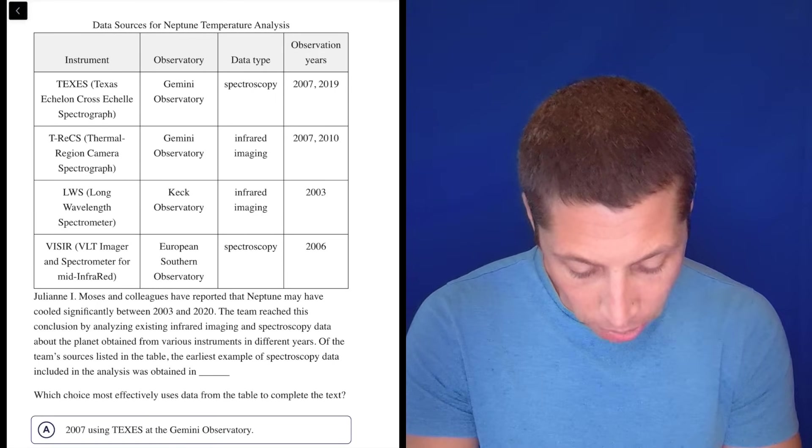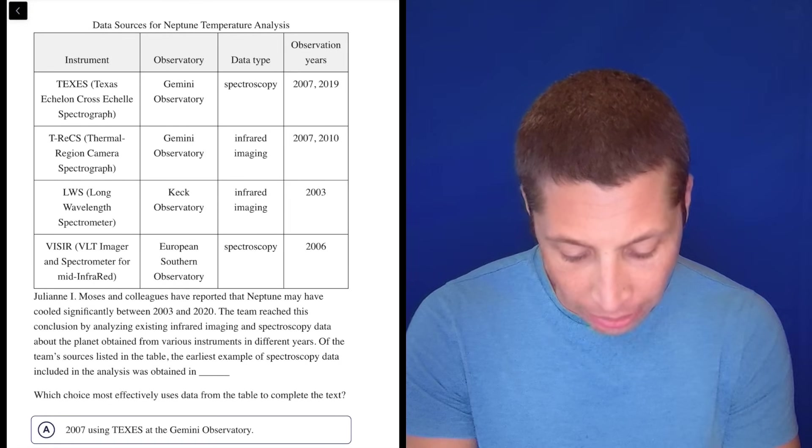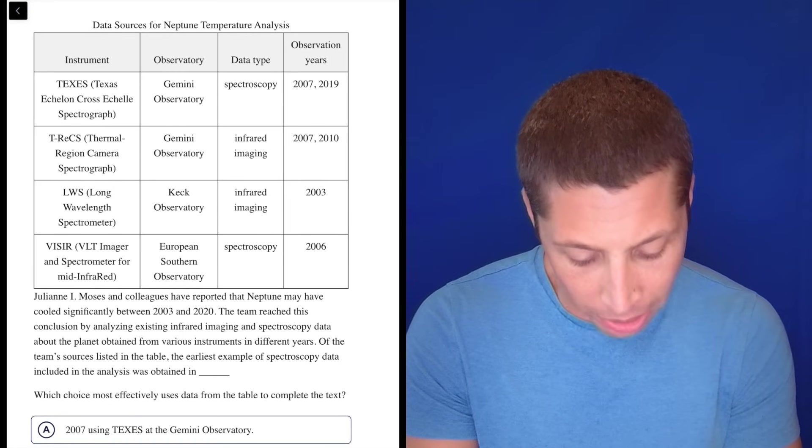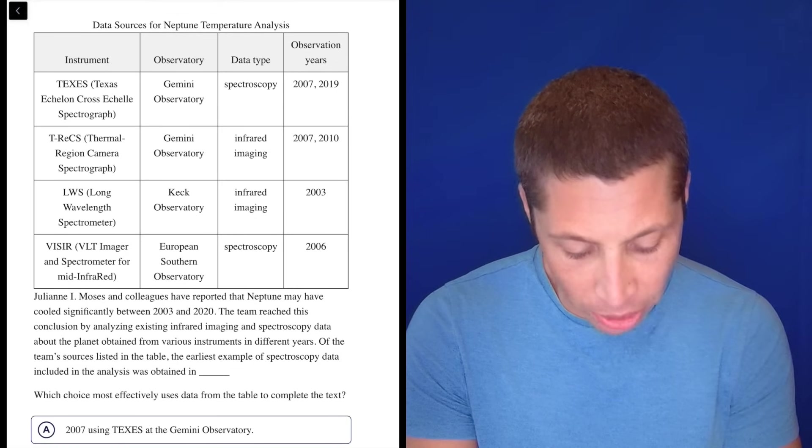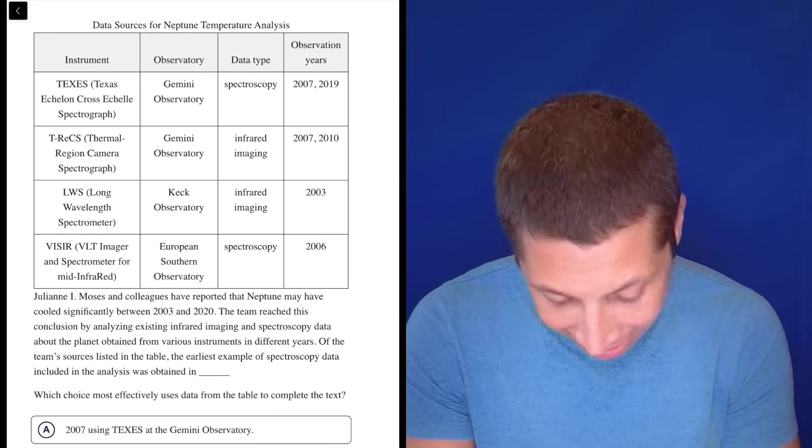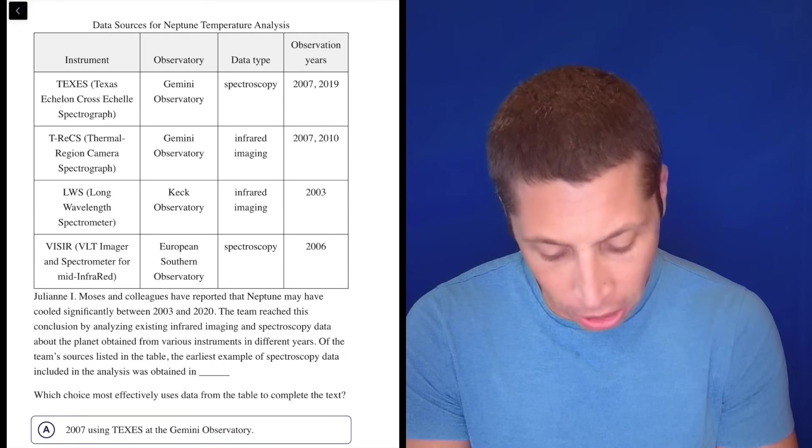Julianne I. Moses and colleagues have reported that Neptune may have cooled significantly between 2003 and 2020. The team reached this conclusion by analyzing existing infrared imaging and spectroscopy data about the planet obtained from various instruments in different years.